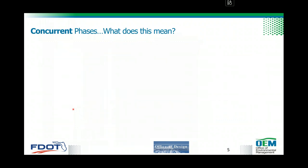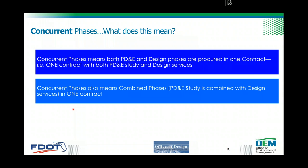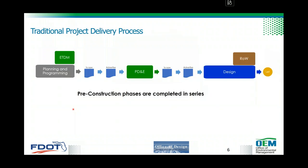Before we dive into the materials, we want to make sure you understand what concurrent phases means. In this context, concurrent phases means both PD&E and design phases are procured in one contract — one contract with both PD&E study and design services. Concurrent phases also means combined phases. What concurrent phases is NOT is a PD&E study with an option for design services. Many of you have been doing PD&E study with an option for design services for many years, but this standard scope of services is not that.